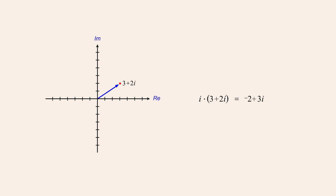Visualizing this result graphically, we see that the resulting vector is the same length as the original vector but rotated counter-clockwise by 90 degrees. In fact, multiplying any complex number by i will always produce a vector of the same length rotated counter-clockwise by 90 degrees.